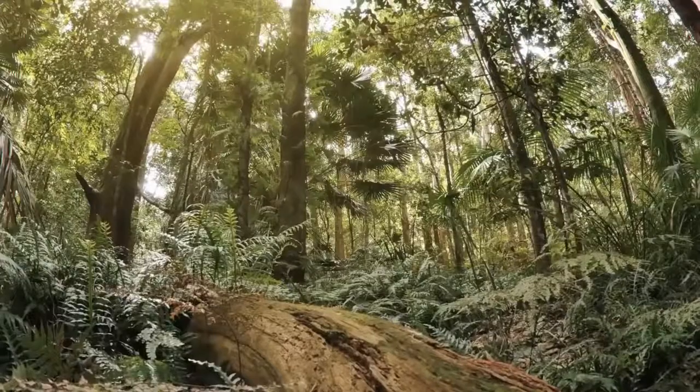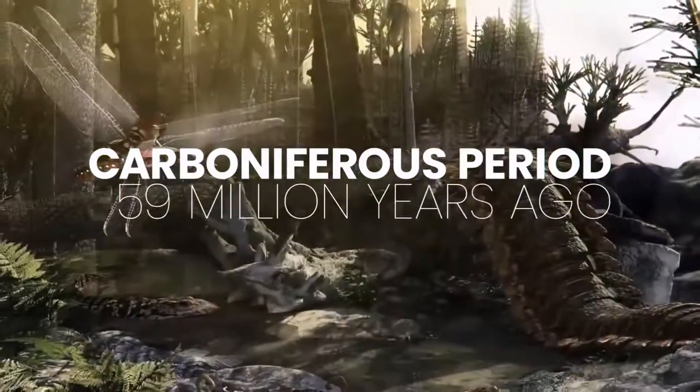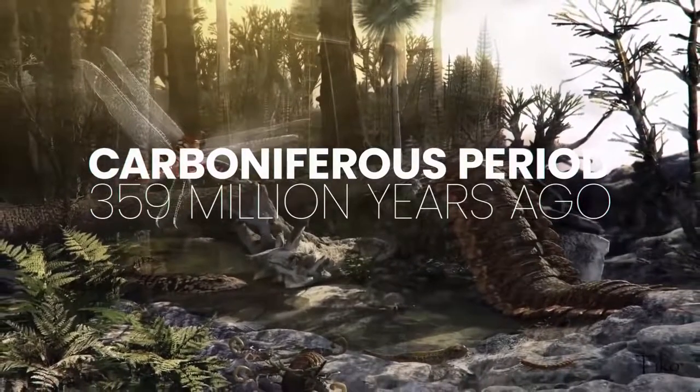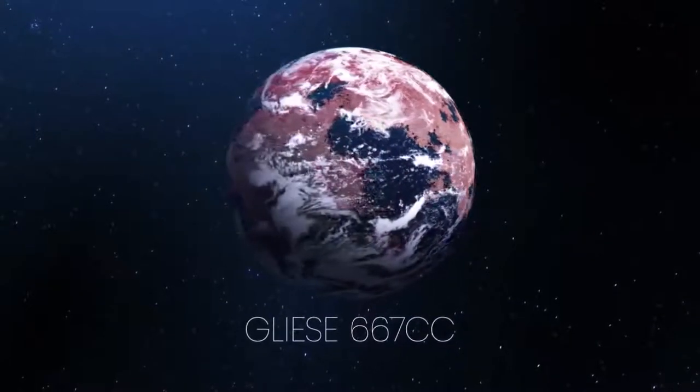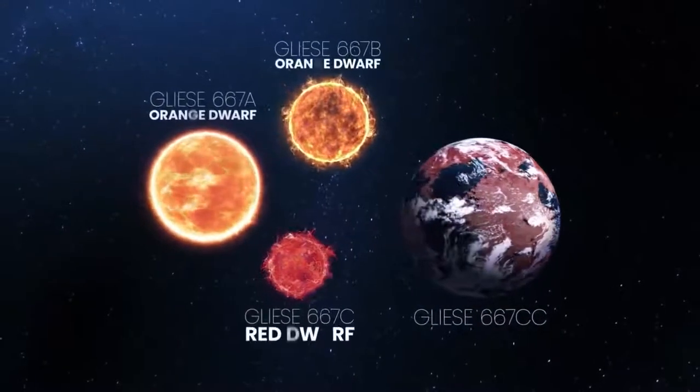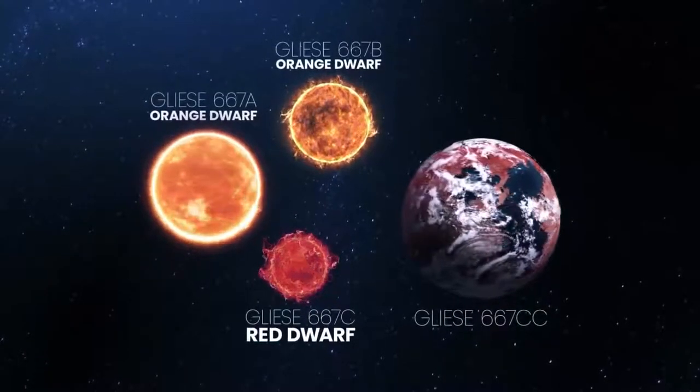Some of these more habitable planets could resemble the Earth in the early Carboniferous Period, about 359 million years ago when the planet had the climate of a tropical rainforest. Gliese 667 cc is the next, closest superhabitable exoplanet which orbits a red dwarf star in the Gliese 667 triple star system, yes, three stars. If you were standing on Gliese 667 cc, this is likely what you would see in the day sky.